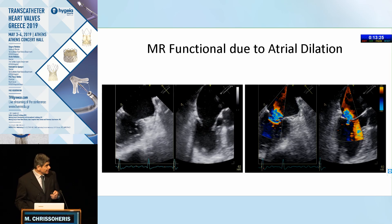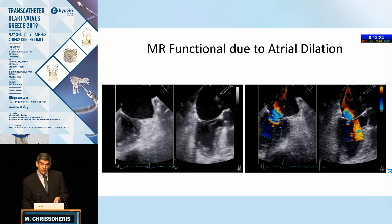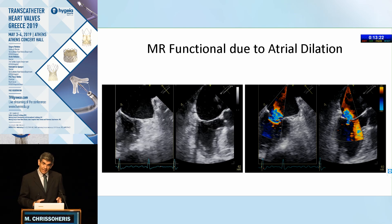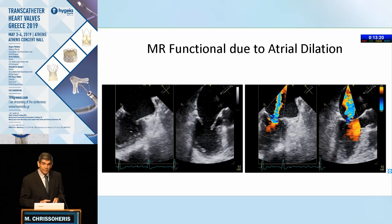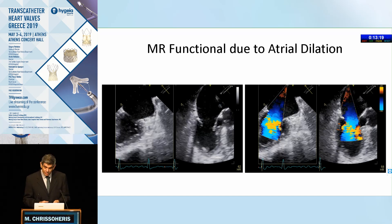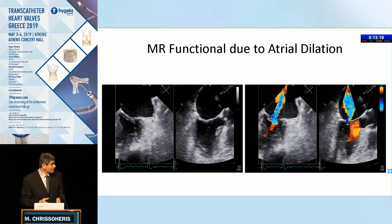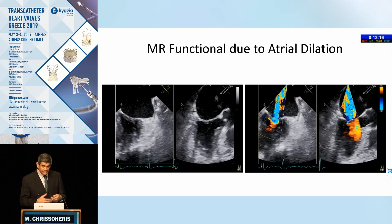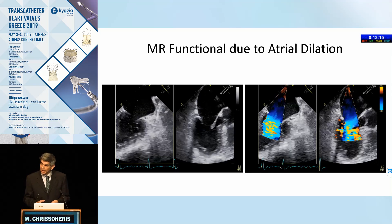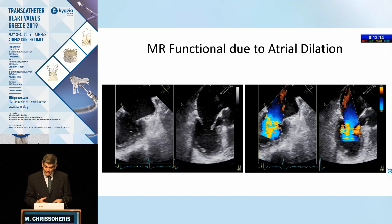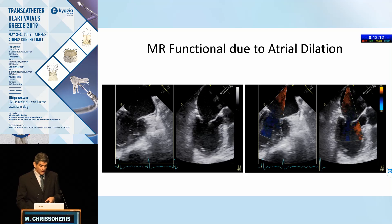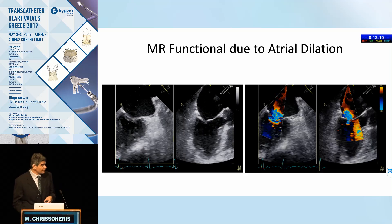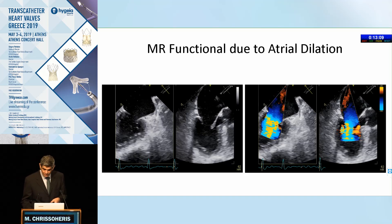There's also the entity of atrial functional MR where the atrium dilates in patients, particularly with atrial fibrillation. Commonly these are elderly patients, and that leads to annular dilatation and severe functional MR with a relatively preserved left ventricular ejection fraction.